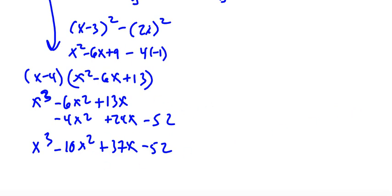So x times x² is x³. x times -6x is -6x². x times 13 is positive 13x. And then we do -4 times x² is -4x².